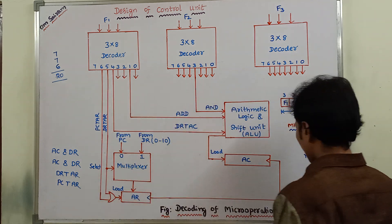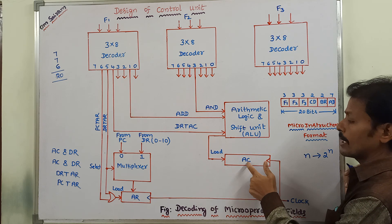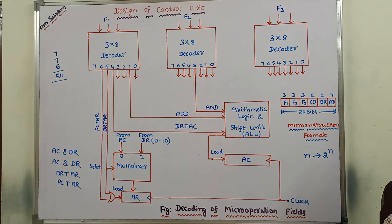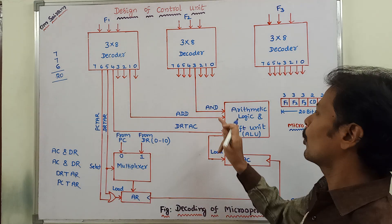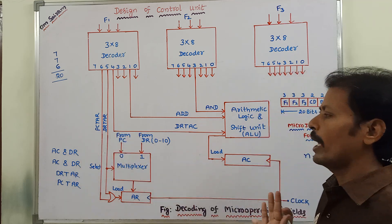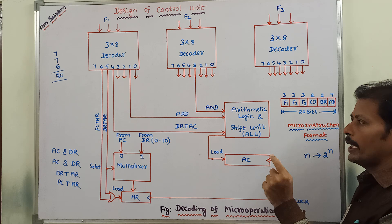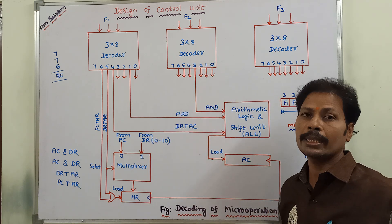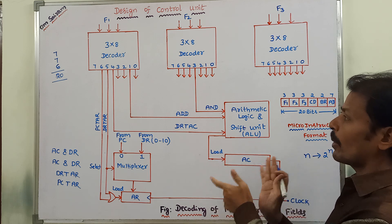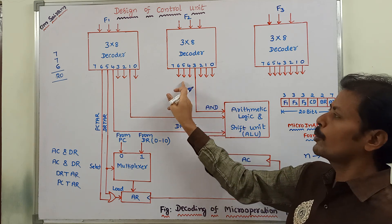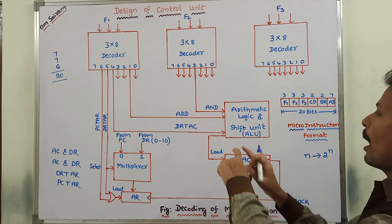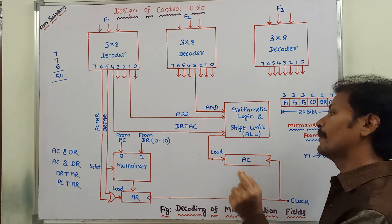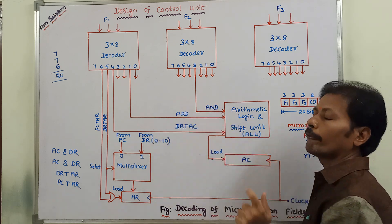Here, whenever the positive clock pulse is applied, the AC register is ready to load information from the arithmetic logic and shift unit. Among the 20 microoperations, I am specifying only 5 microoperations in the diagram. The remaining 15 microoperations are also performed through this control unit, but to avoid complexity in the diagram, they are not shown.